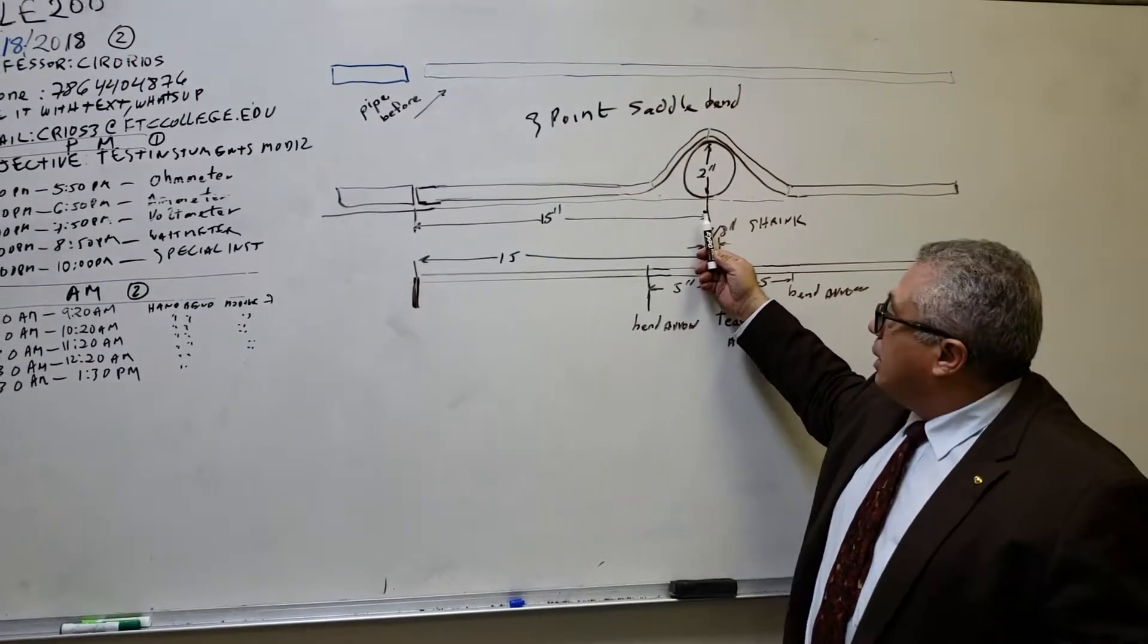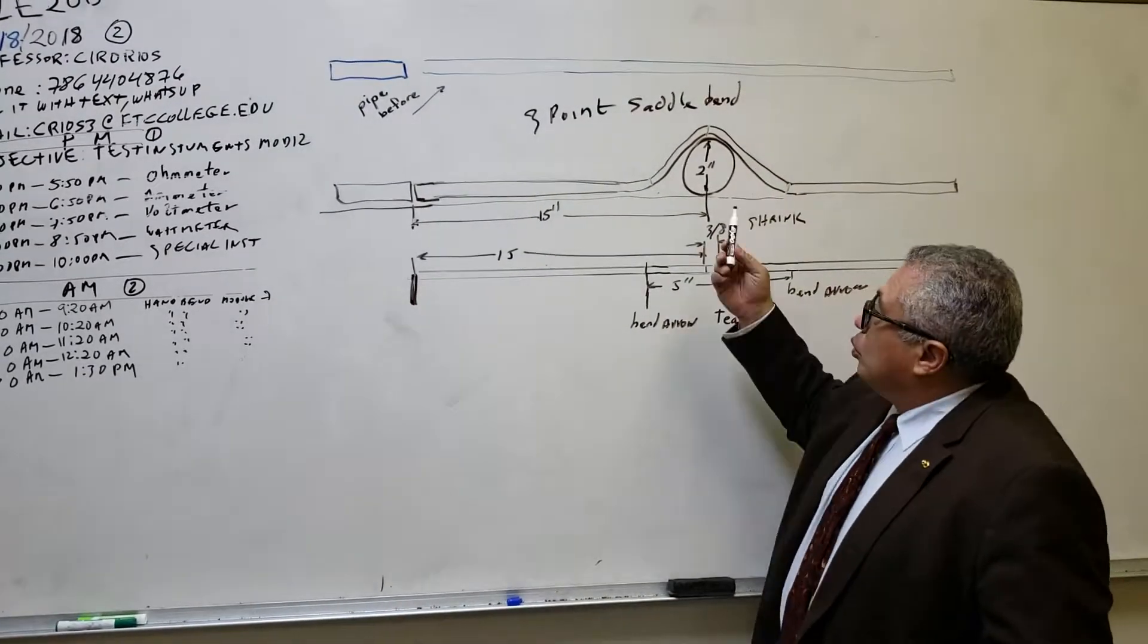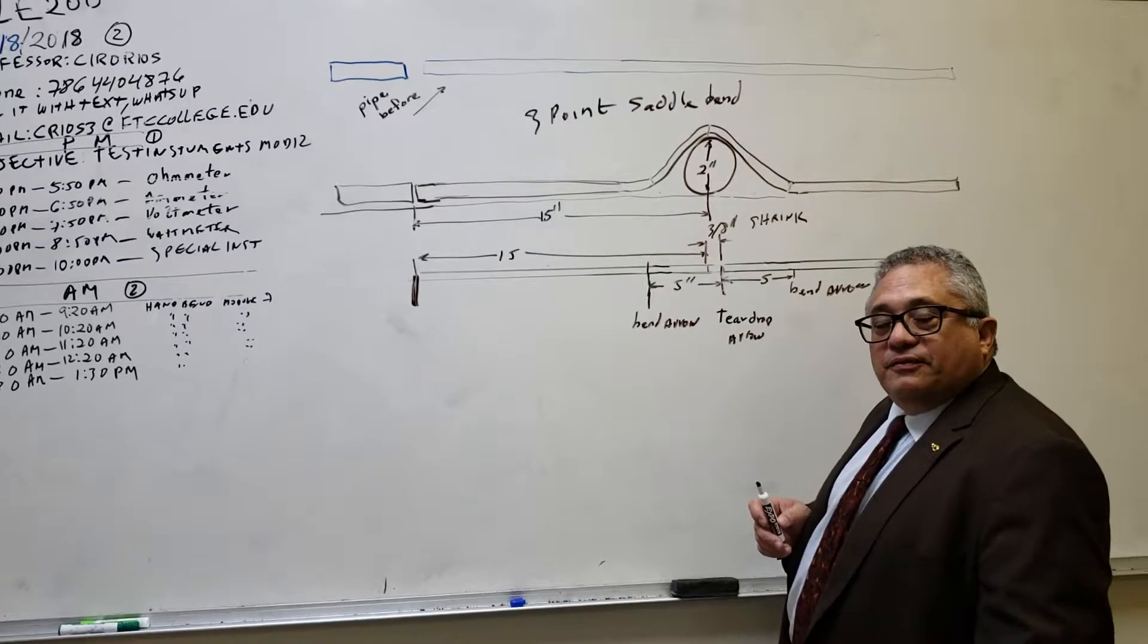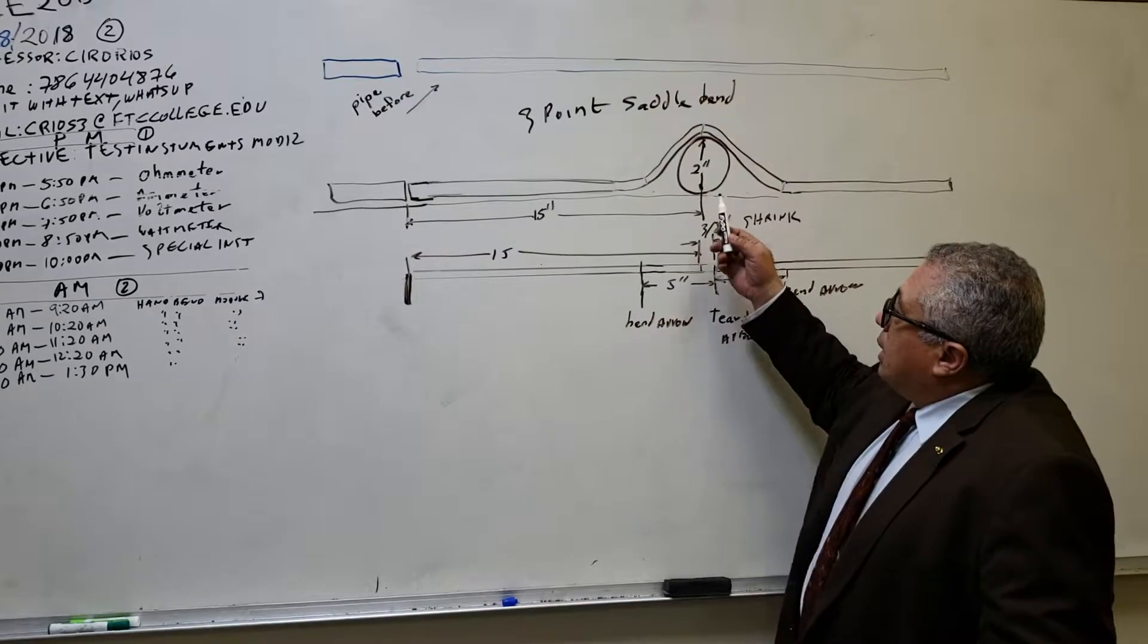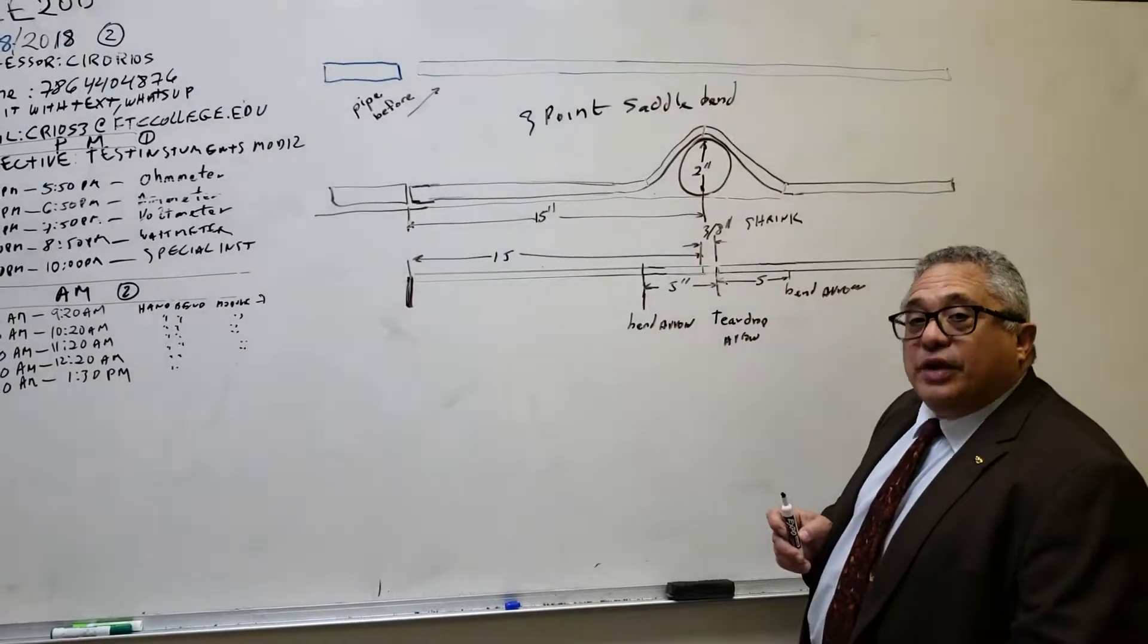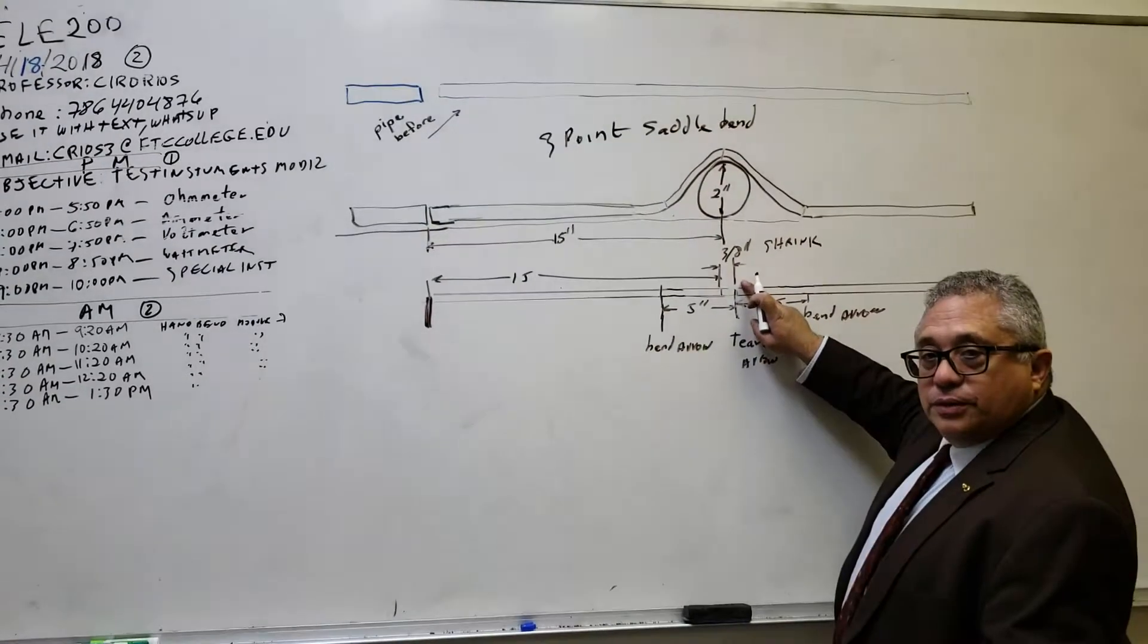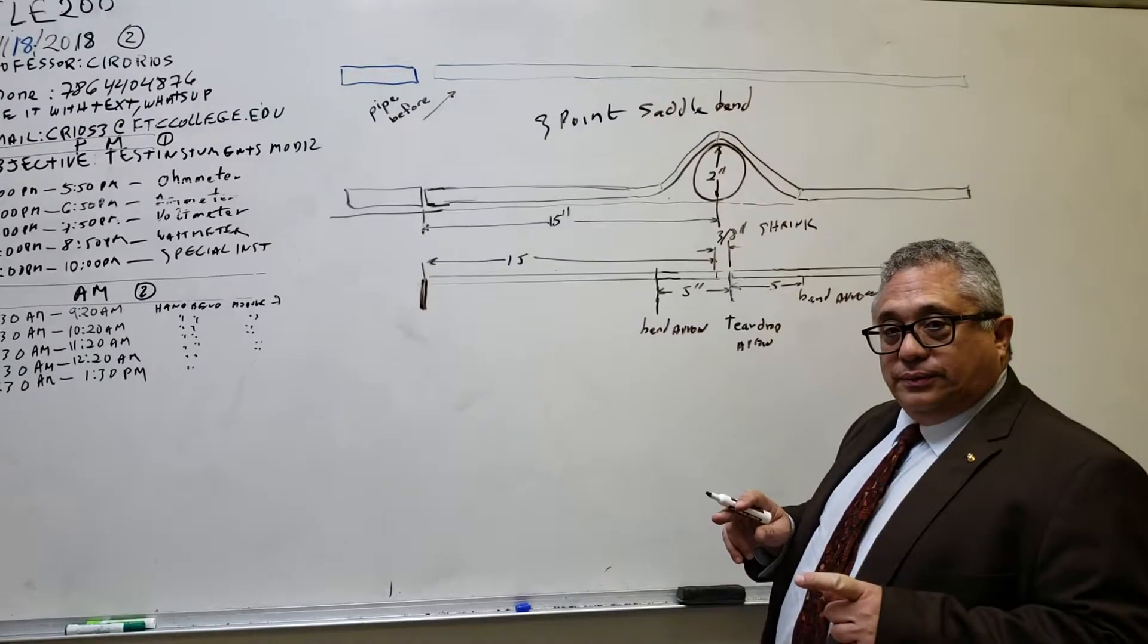Step number two is according to the height of the obstacle, which in this case is round, you have to find out what is the shrink value for that obstacle. In this case, for a two-inch diameter, the shrink value is three-eighths of an inch. So to that measurement of three inches, you add the three-eighths of an inch, and that is going to be your new center.